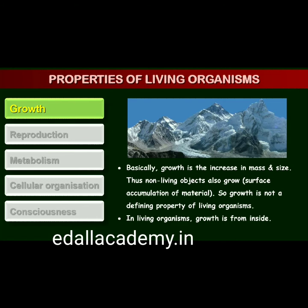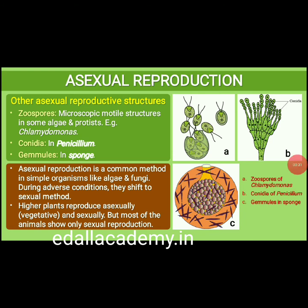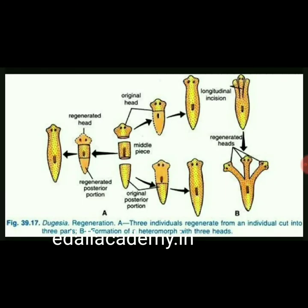A dead organism does not grow. Reproduction, likewise, is a characteristic of living organisms. In multicellular organisms, reproduction refers to the production of progeny possessing features more or less similar to those of parents. Invariably we refer to sexual reproduction, but organisms reproduce by asexual means also. Fungi multiply due to millions of asexual spores they produce. In lower organisms like yeast and hydra, we observe budding. In flatworms, we observe true regeneration - a fragmented organism regenerates the lost part and becomes a new organism.